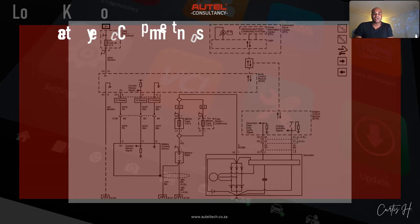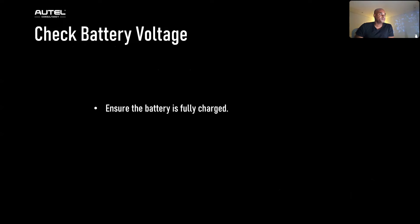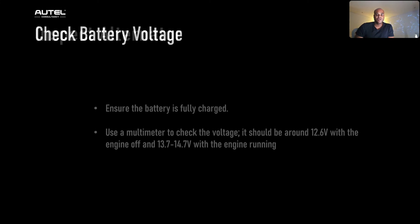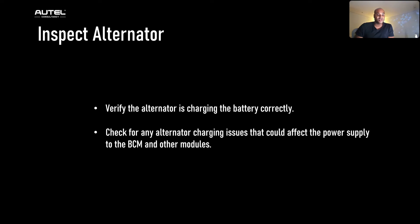The first thing we're going to check is to verify the battery and charging system. Ensuring a stable power supply is fundamental before diagnosing communication issues. Check the battery voltage — ensure the battery is fully charged using a multimeter. It should be around 12.6 volts with the engine off, and 13.7 to 14.7 volts with the engine running. Next, inspect the alternator and verify it's charging the battery correctly, checking for any alternator charging issues that could affect power supply to the BCM and other modules.